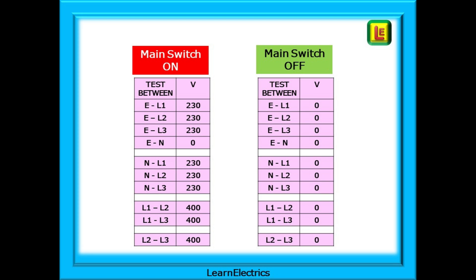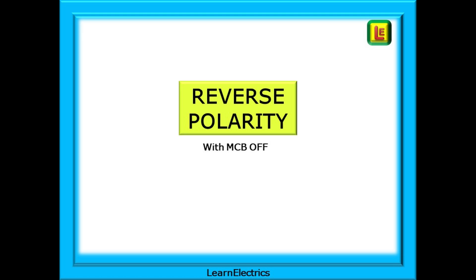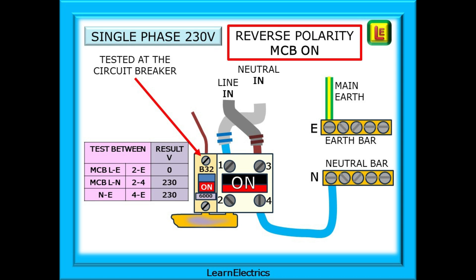What about reverse polarity? How can we identify a reverse polarity installation or circuit? With reverse polarity, most devices and appliances will still work, but the safety of the user is compromised. Let's look. Shown on the drawing, the incoming meter tails have been reversed in the main switch. What effect will this have on voltage checks?